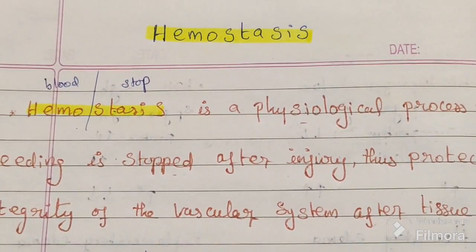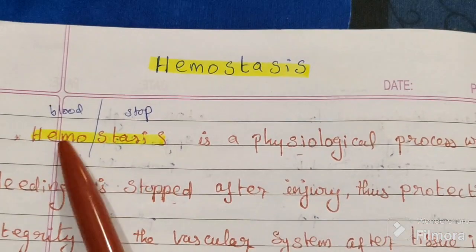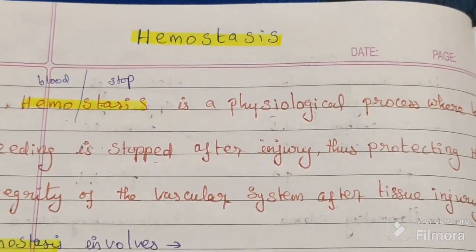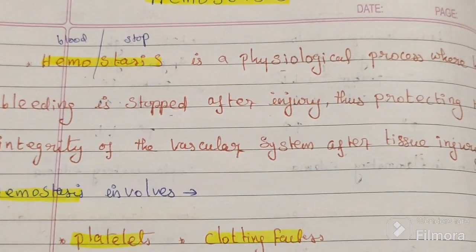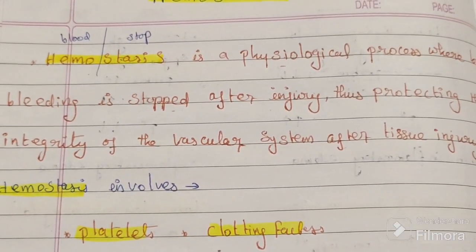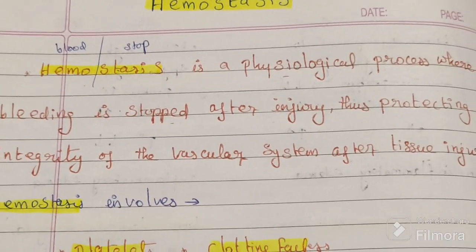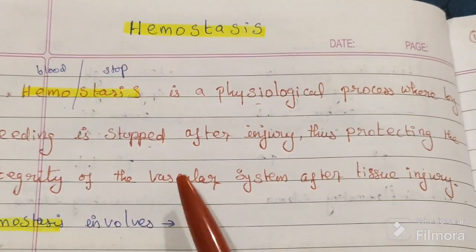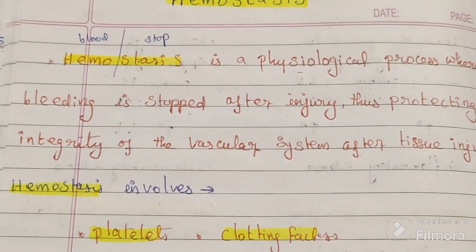In this video we'll discuss hemostasis. 'Hemeo' means blood, 'stasis' means stop. Suppose we have a cut or injury — bleeding automatically stops after a few seconds or minutes. The mechanism by which this automatically takes place in the body is known as hemostasis. Whenever bleeding happens, this process automatically stops it.